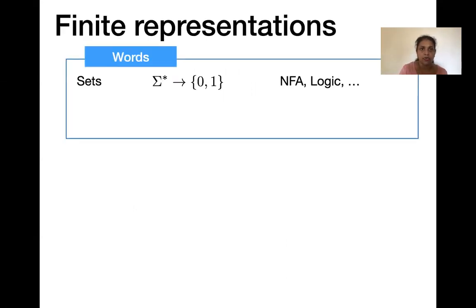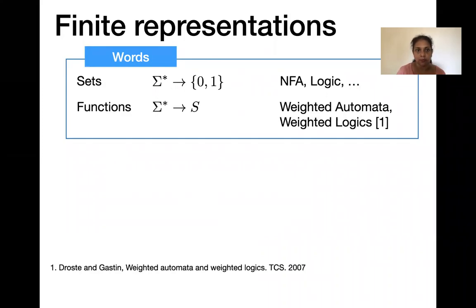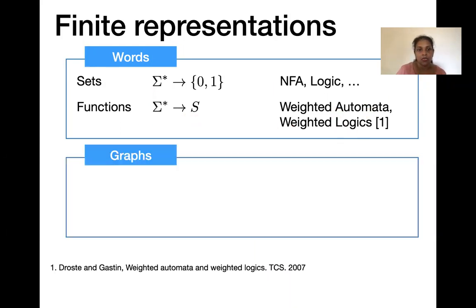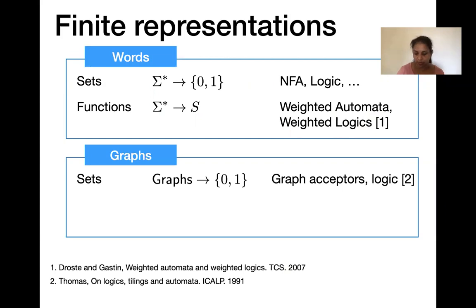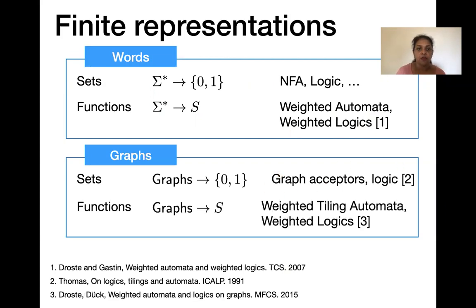Tiling systems in general provide a finite representation for some sets. For instance, some sets of words can be represented finitely using finite automata or suitable logic, and for functions we can use weighted automata or weighted logics. When we look at sets of graphs this becomes graph acceptors or logics on graphs, and when we look at functions from graphs to a weight domain, we can use weighted tiling systems or weighted logics.